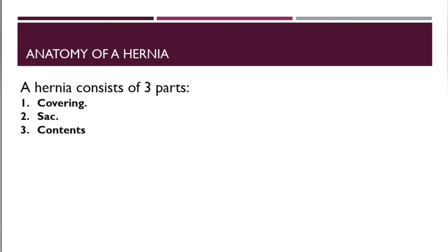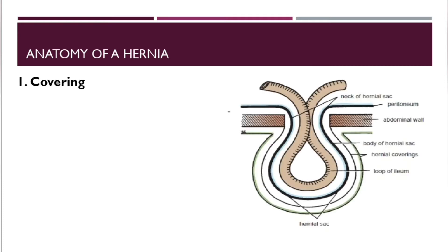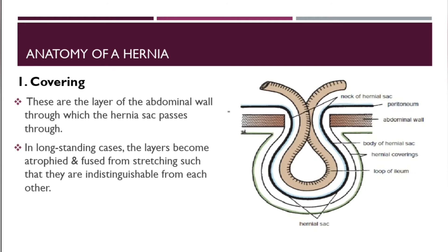The anatomy of a hernia consists of three main parts: the covering, the hernial sac, and the contents. The coverings are the layers of the abdominal wall through which the hernial sac passes.